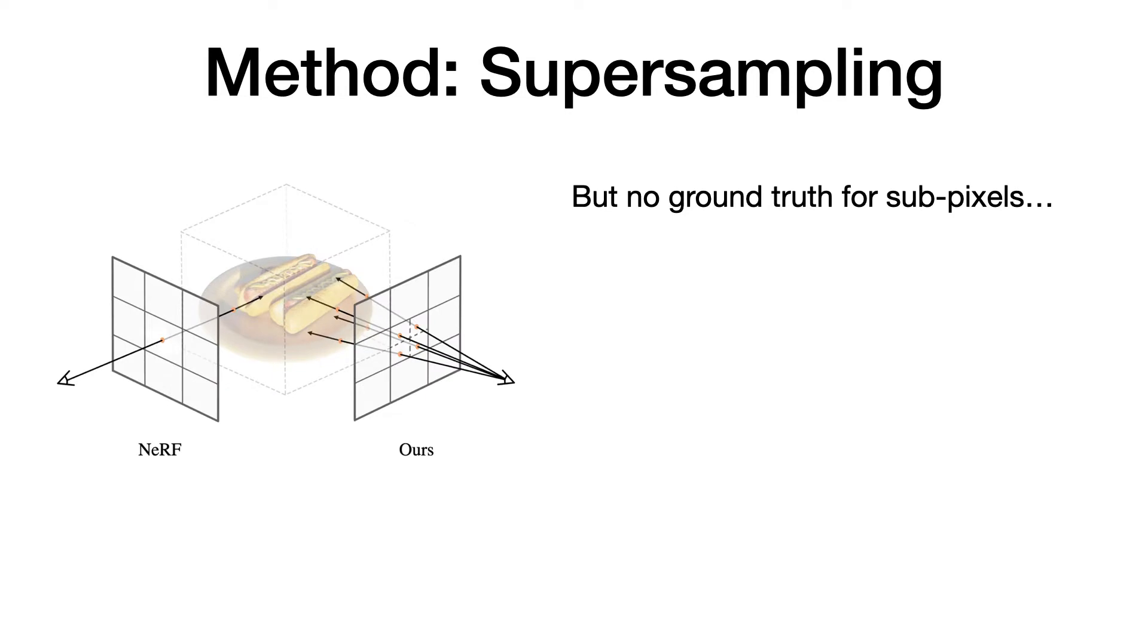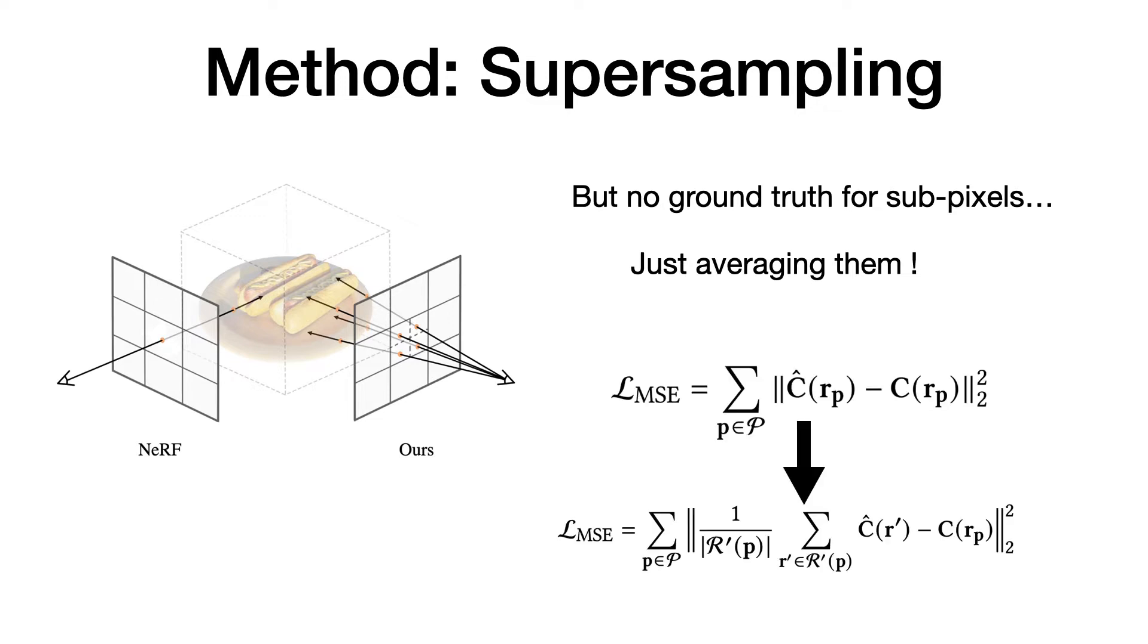But how to supervise those subpixels given only ground truth color of the whole pixel? Inspired by the graphics pipeline, we tackle this issue by computing the color for subpixels in R' using equation 1, and then average them and compare with the color of P. Then the loss function in original NeRF can be extended to this equation.